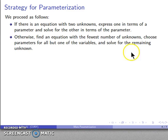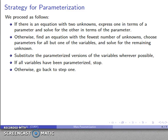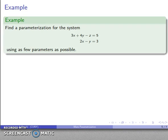Otherwise, if I can't find an equation with just two unknowns, I'll find an equation with the fewest number of unknowns. I'll choose parameters for all but one of those variables and solve for the remaining unknown. Now that I have a parameterized set of variables, if I have other equations, I can substitute in the parameterized versions wherever I can. If I've parameterized all variables at this point, I'm done. Otherwise, I'll go back to step one and look for an equation with just two unknowns.